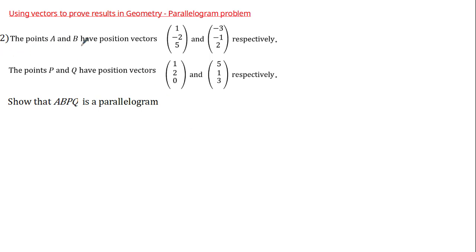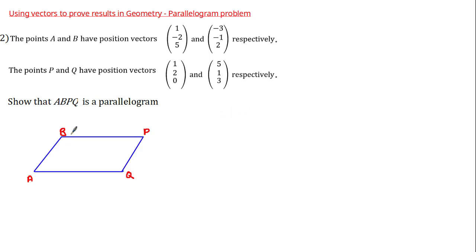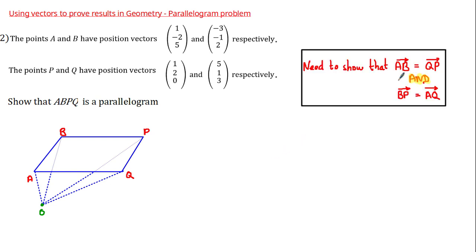Welcome back. We've been given four points A, B, P and Q with their position vectors. In this example we have 3D vectors as opposed to the 2D coordinates from the last example. Let's start by assuming ABPQ is a parallelogram and drawing a sketch marking the points A, B, P, Q relative to a fixed origin O in a 3D plane. Using vector methods, we need to show that vector AB equals vector QP, and vector BP equals vector AQ.